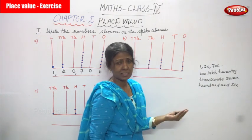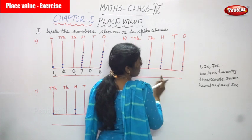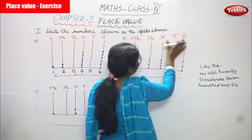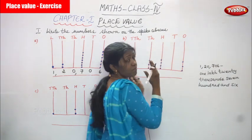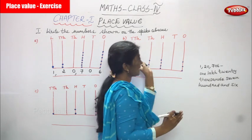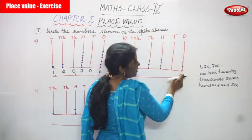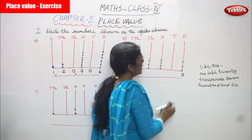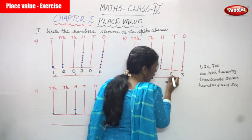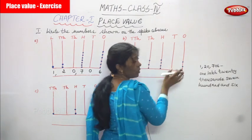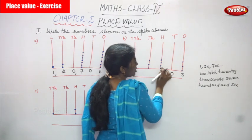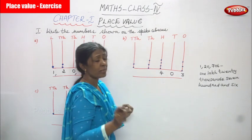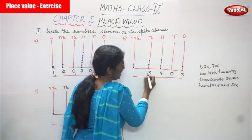We will go to the next sum. We always start with the ones place. In the ones place, how many digits? Three dots — so I write 3. In the tens place, there is no dot — put zero. In the hundreds place: 1, 2, 3, 4 dots — write four. In the thousands place, how many dots? 1, 2, 3 — write three as it is.